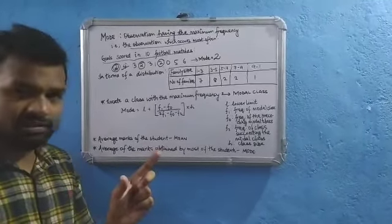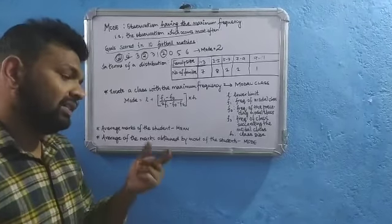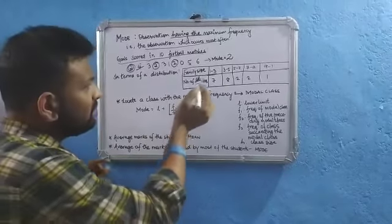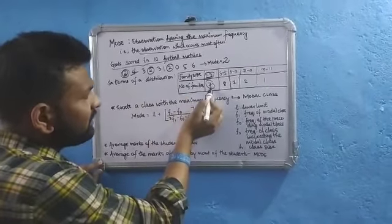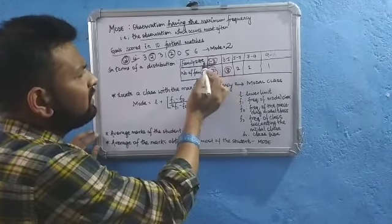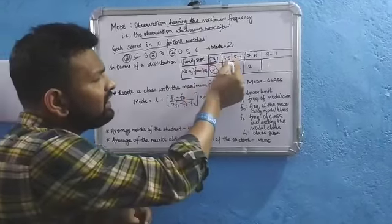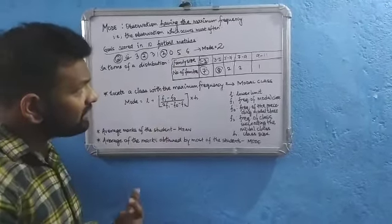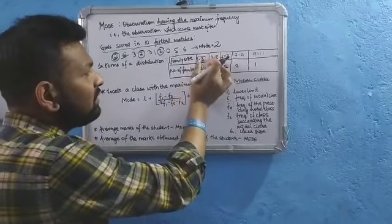It's not so simple when data represents a particular range, which we call a class interval. Here our job is to extract information from grouped data. For example, 7 families have a family size from 1 to 3 — it may be 1, 2, or 3. We cannot specify the exact value, so we have an interval instead of knowing the mode directly.